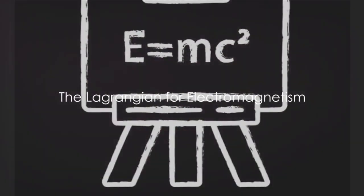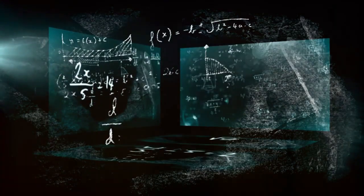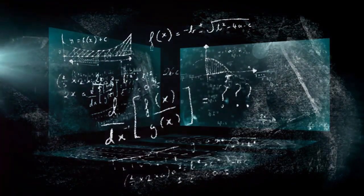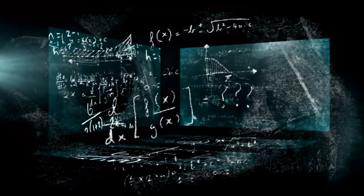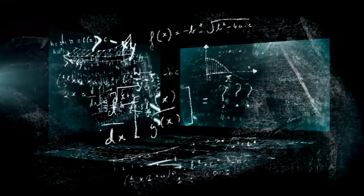Then we have the Lagrangian for electromagnetism. This describes the behavior of electric and magnetic fields and their interactions with charged particles. Maxwell's equations, fundamental to classical electromagnetism, are central components of this Lagrangian.